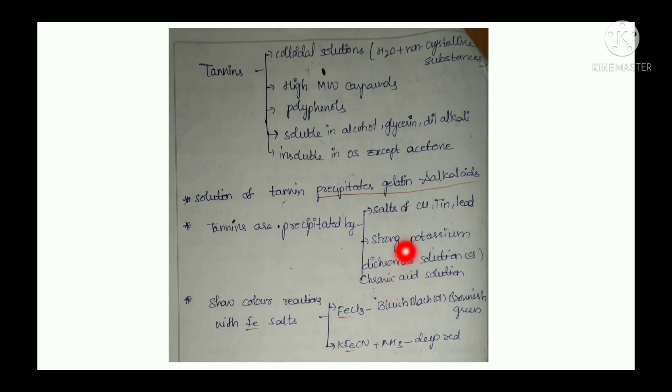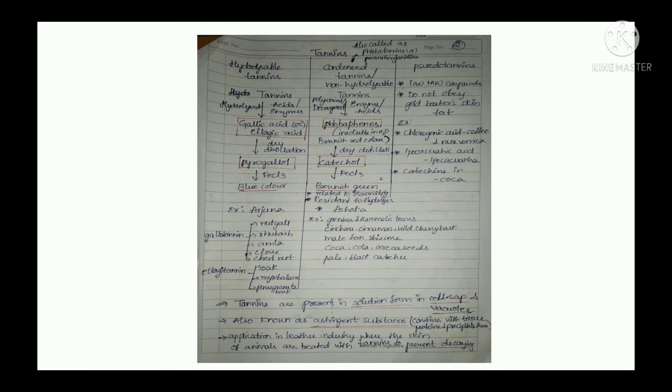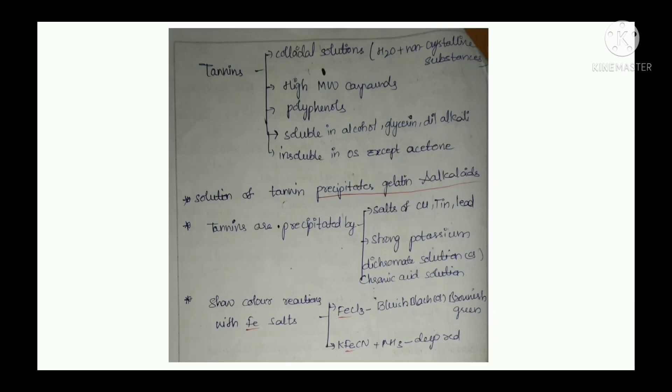These tannins show colored reactions with iron salts. Previously we have seen hydrolyzable has shown a blue color whereas condensed has shown brownish green color. With the ferric salts it shows bluish or brownish green, and with potassium ferricyanide it shows deep red.